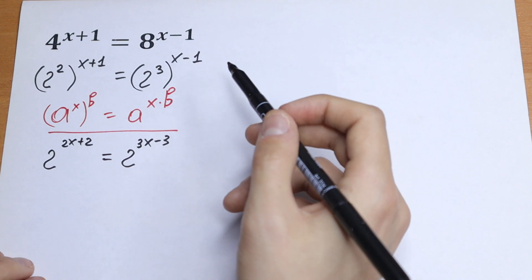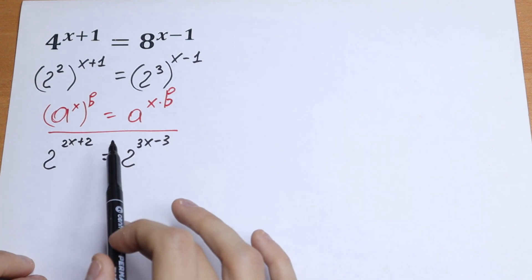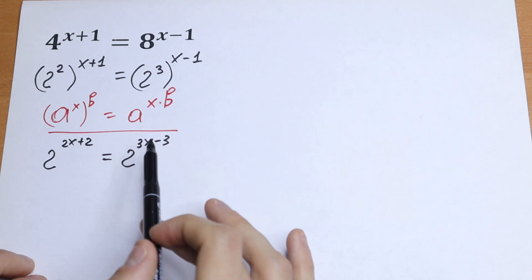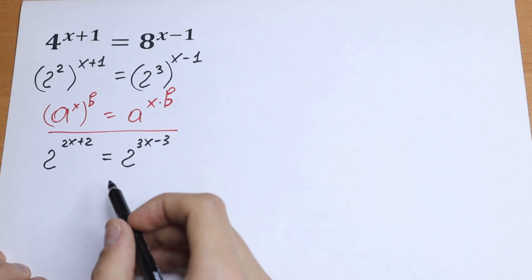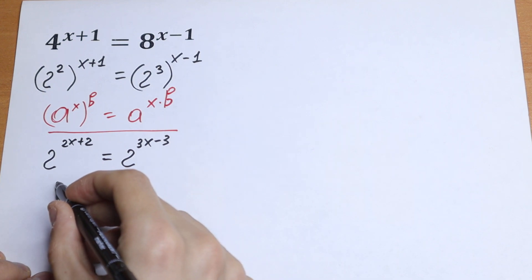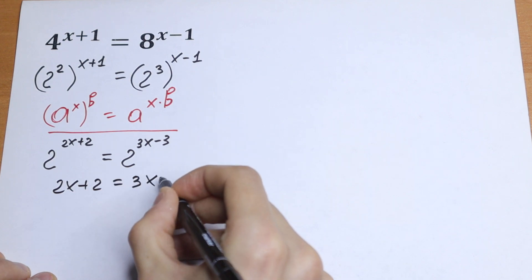What we are going to do next? If we have the same basis, we need to write an equation with our exponents. Because this is one of the ways. We have a different and interesting equation: 2x plus 2 equals 3x minus 3.